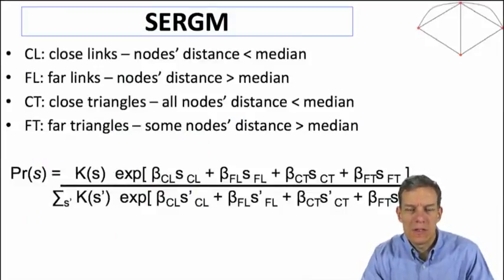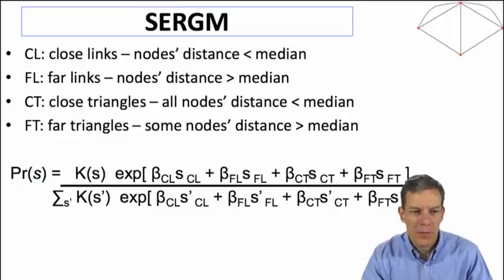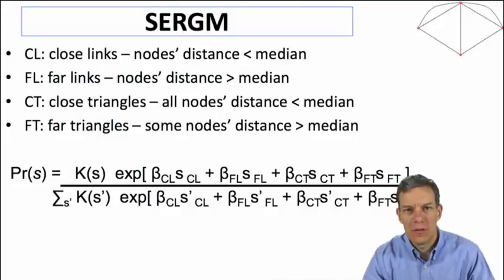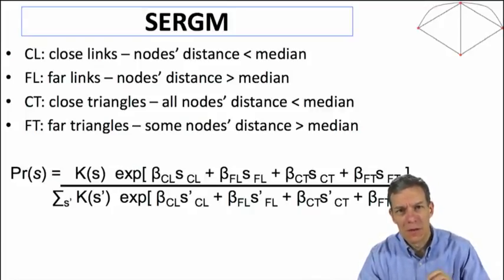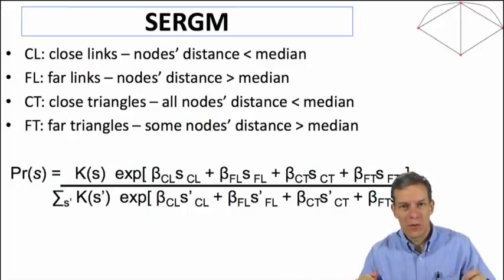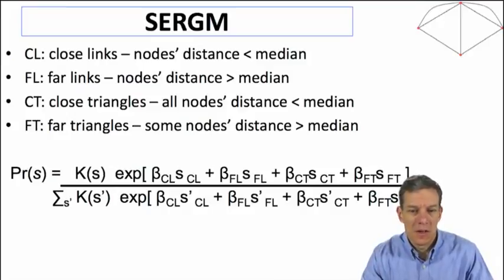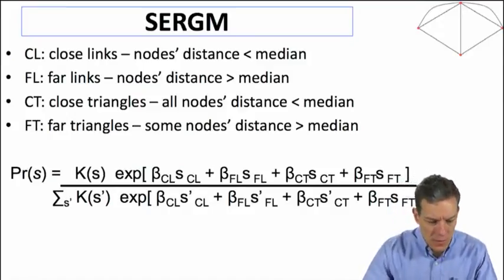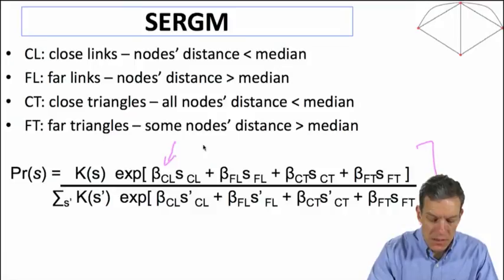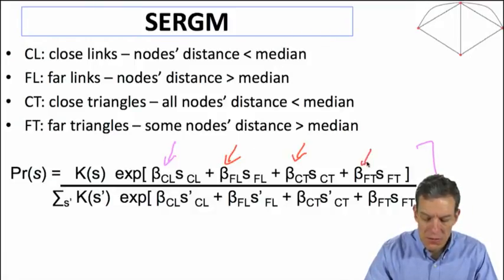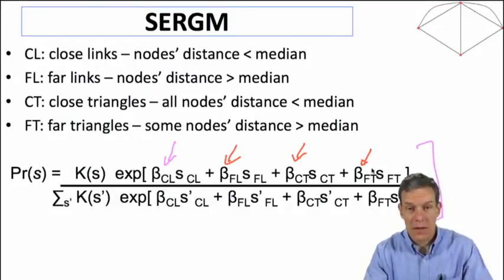So we have close links where the node distance is less than the median, far links where the distance is greater than the median, close triangles where all nodes are close by, and far triangles where some nodes have distance bigger than the median. It's a simple model categorizing links between nodes that are relatively close together or far apart in social characteristics, giving us a simple exponential random graph model.